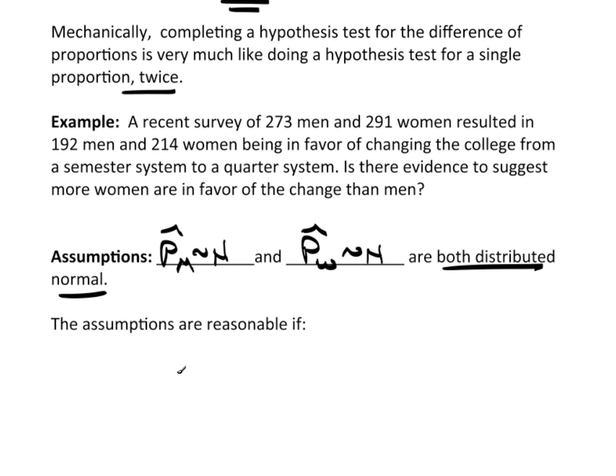Now the assumptions are going to be reasonable if n1 times p-hat 1 has to be at least 5, and n1 times 1 minus p-hat 1 has to be at least 5. Now this is exactly what we saw with the one sample, right? Only we didn't have subscripts because we only had one sample. And we also need n2 times p-hat 2 to be at least 5, and n2 times 1 minus p-hat 2 to be at least 5.